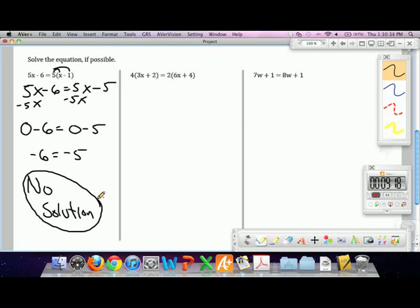This is contrasted with the second example. The second example, if we distribute, you get the following. 12x plus 8 equals 12x plus 8. And if you subtracted, say, 12x like we've always done, you get 8 equals 8. Did you distribute the two? Does 8 equal 8? Yeah, it does.